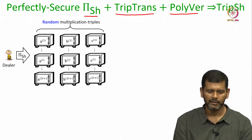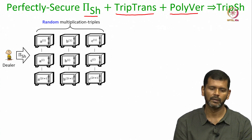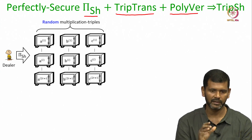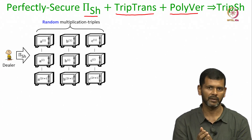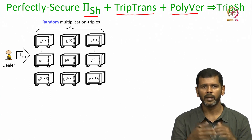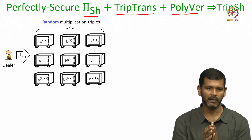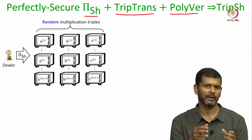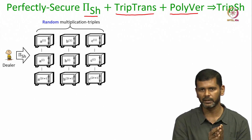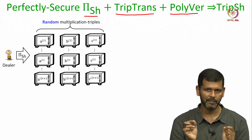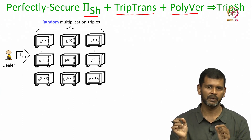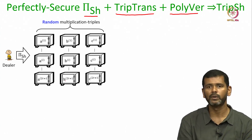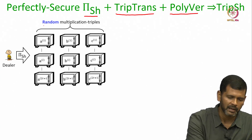Here is the way we can combine any polynomial-based VSS with the triple transformation protocol and the polynomial verification protocol to get our triple sharing protocol. To begin with, the dealer will secret share a bunch of random multiplication triplets. Remember, the goal of the dealer is to secret share one multiplication triplet at the end of the protocol, but we also want a verification process to be incorporated. In this specific case, the dealer secret shares 2t plus 1 number of arbitrary and random multiplication triplets.